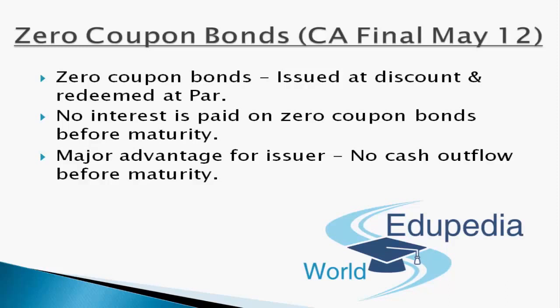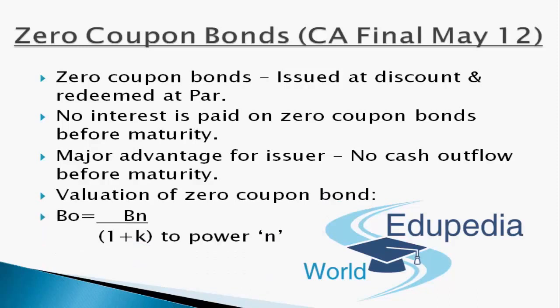By doing that, the value of the bond would be the maturity value divided by one plus yield with the number of years. That is: B0 = BN / (1 + K)^N, where N is the number of periods. Thus, the value of any zero coupon bond is the face value discounted to its maturity period. It is obvious that B0 would always be lower than BN. In other words, BN minus B0 is called the discount, which is always a positive number, and thus zero coupon bonds are sold at a discount to their face value.